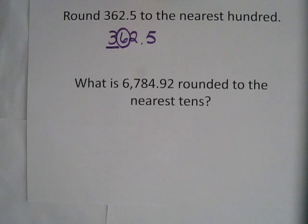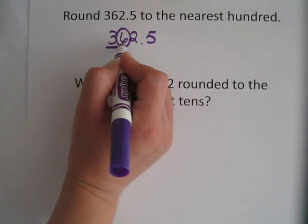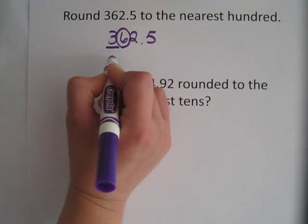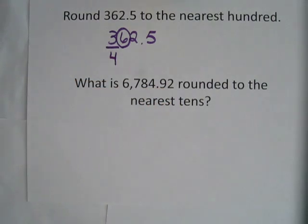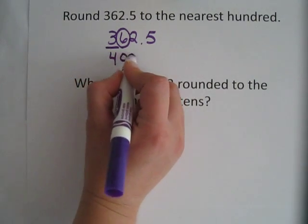So if it's a 5, 6, 7, 8, 9, we're going to give it a shove and move that 3 up one, which in this case it is because it's a 6. So the 3 is going to become a 4.